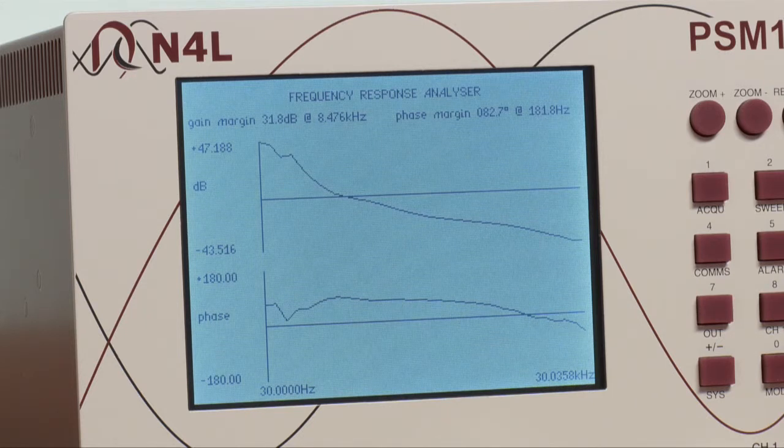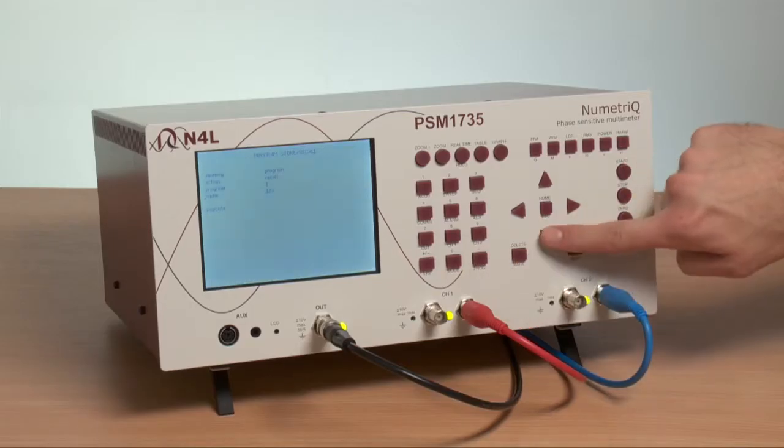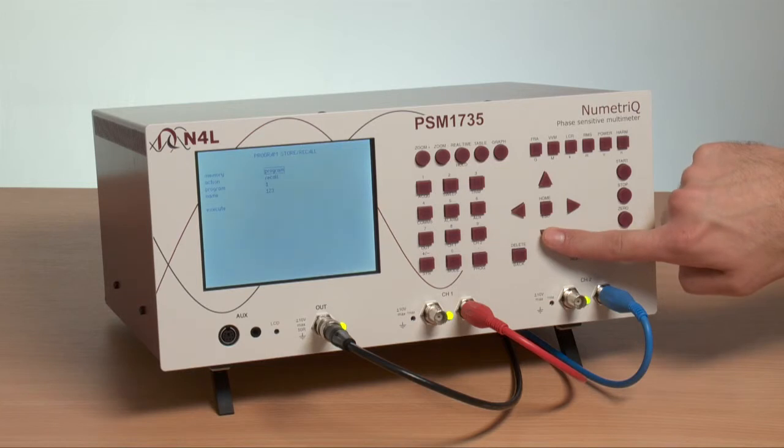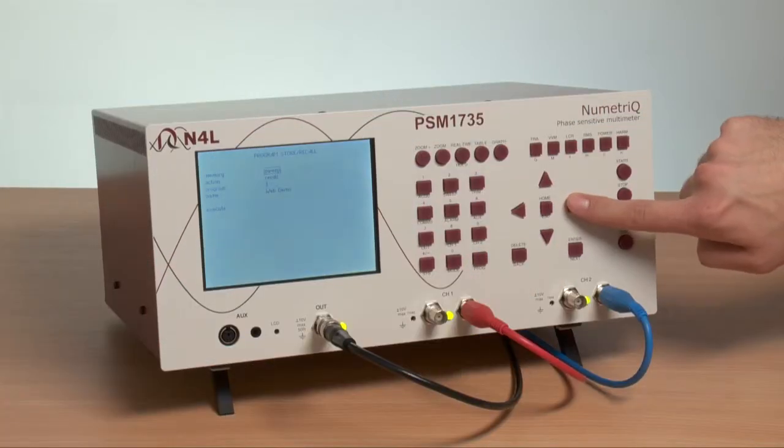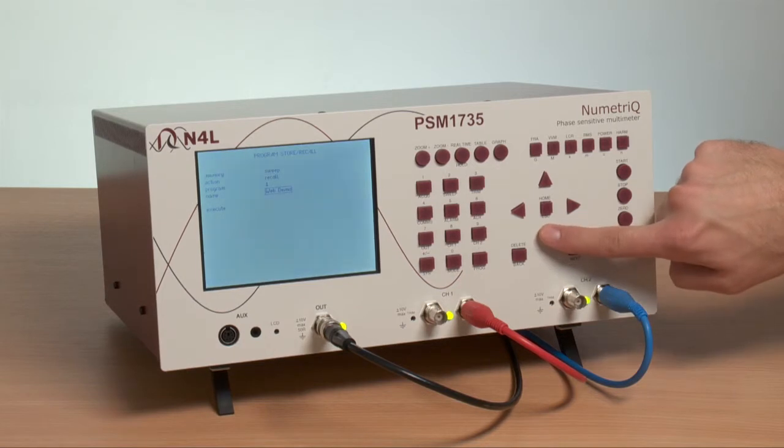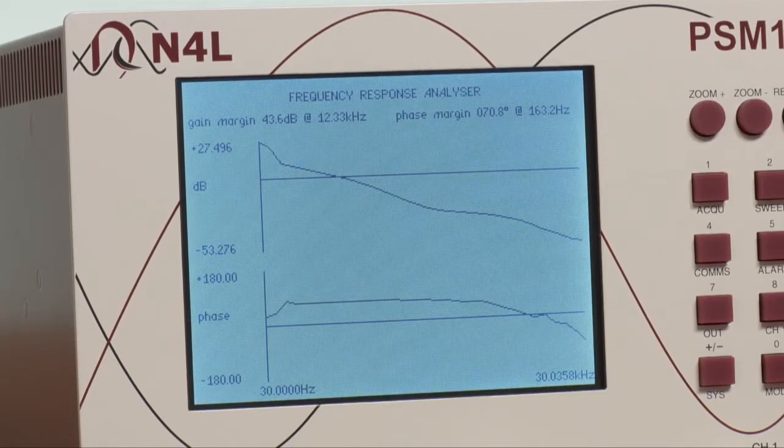We have in the internal memory a previous sweep measurement saved. To illustrate this, if we go into the program menu, we can recall programs, data logs, or sweeps. And if we recall a sweep we have made recently and select Execute, you can see that the program is loaded. And that can be compared to other plots or exported to a PC.